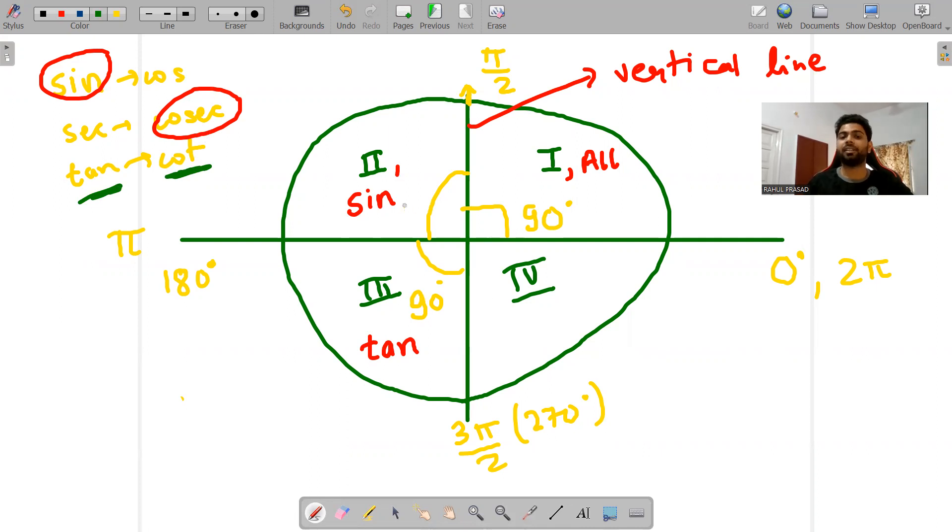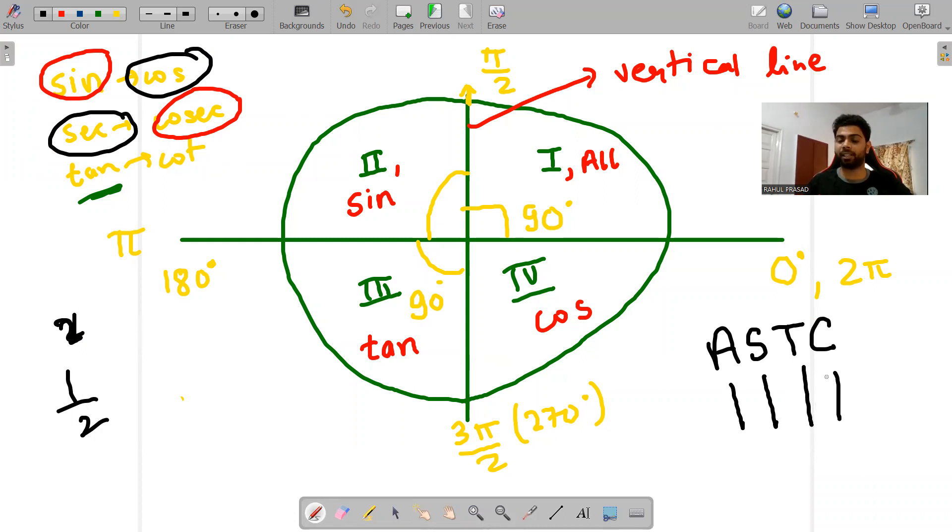After that, in the fourth quadrant, if cos is positive, sec will also be positive because obviously if one is positive, the reciprocal will also be positive. So one of the short tricks to remember is ASTC: All, Sine, Tan, Cos. This is a very very important thing to remember.